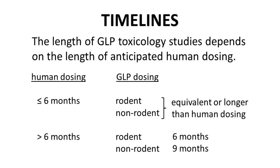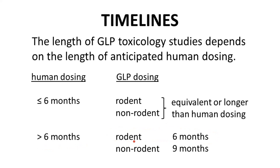The length of GLP toxicology studies depends on the anticipated dosing period of the clinical compound. Some compounds are not dosed in patients for a long period — for example, a course of antibiotics may require just 10 days of medication. Compounds with a shorter dosing regimen undergo correspondingly short toxicology studies. The general rule of thumb is that GLP toxicology dosing must be performed for at least as long as human dosing in both the rodent and non-rodent studies. This rule holds until 6 months of human dosing. Beyond 6 months of dosing in humans, the rodent studies may be terminated at 6 months, but the non-rodent studies must be continued until 9 months.